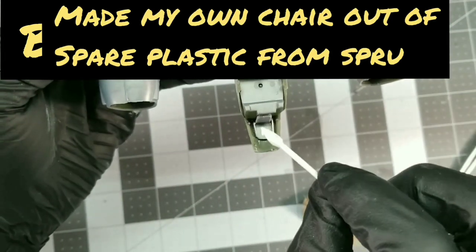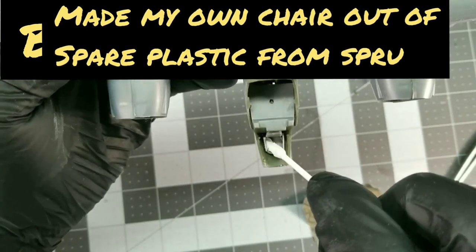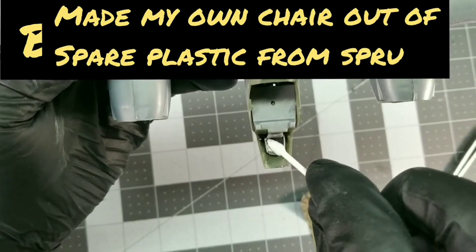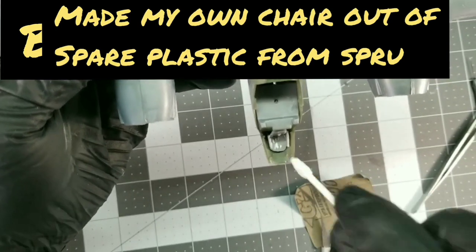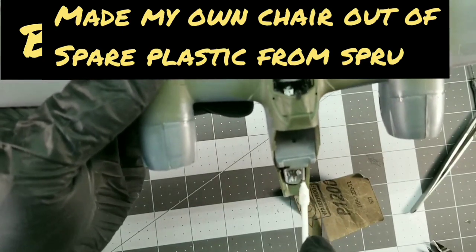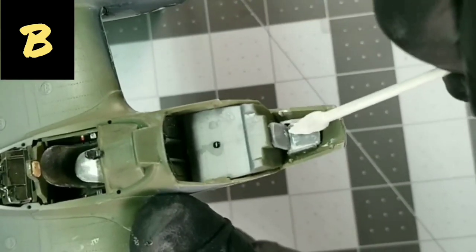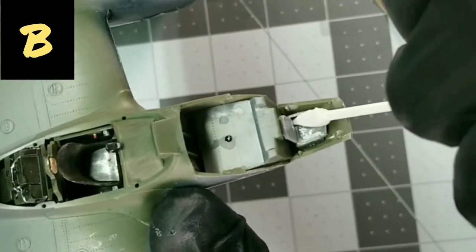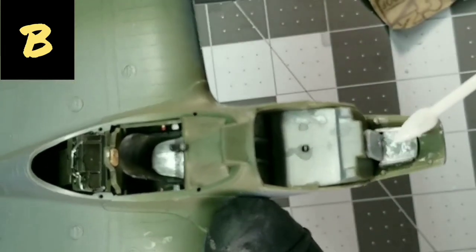And then what I do is I take a white putty and just fill in all those seams. And this works so good. And obviously it's a water-based putty, so you wipe it off and it seams into all the cracks and stuff. It makes it look like there's a cushion, almost. Now I'm wiping out all the putty and stuff and it looks good.